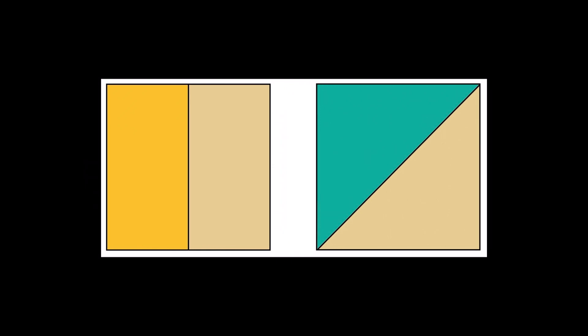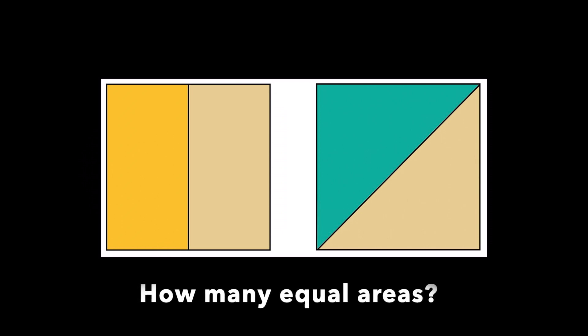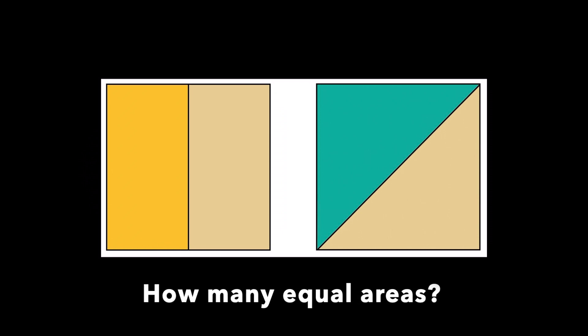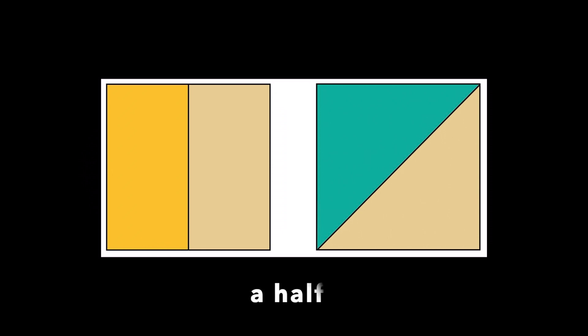Each partition covers an equal area. Equal areas can be different shapes on different models. So how many equal areas? Two. Each equal area is called a half. Each area is one half of the whole canvas.